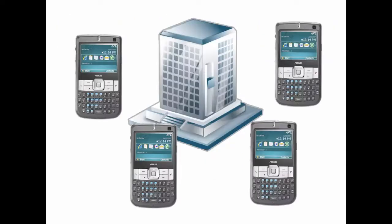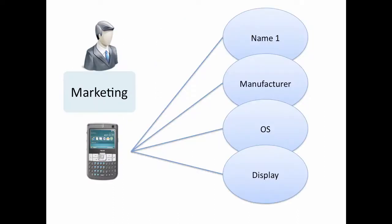Think of a company that produces mobile phones and wants to create a model of its line of products. There will most probably be some differences in which properties of the products are actually relevant in the respective contexts. In the model of the company's marketing department there might be a concept for a smartphone one with a special definition. They might relate it to manufacturer Corporation A and to several concepts representing different features like Android OS, multi-touch display etc.